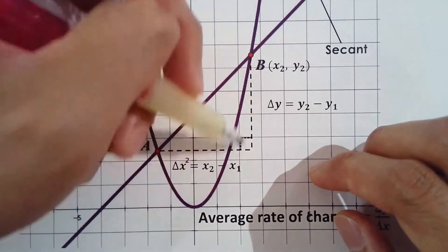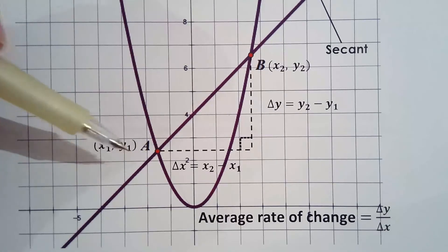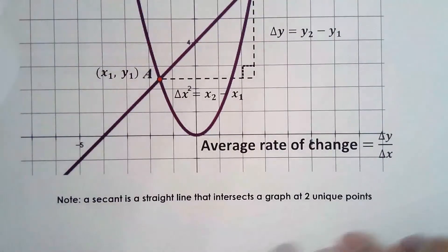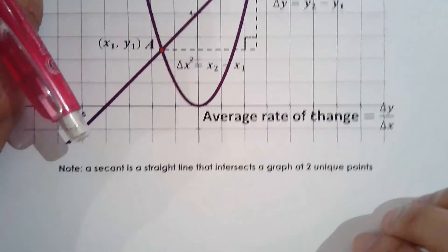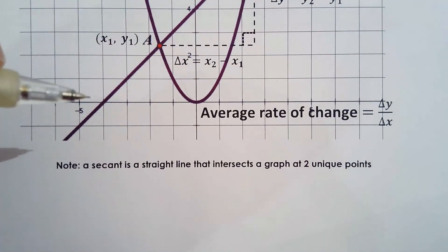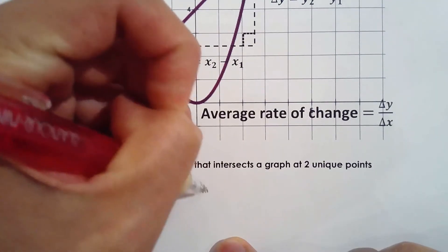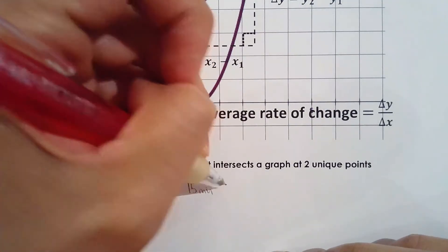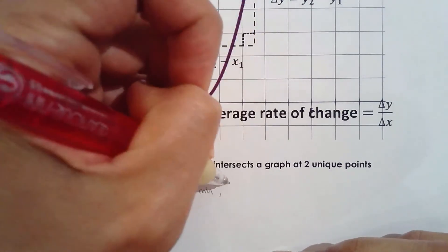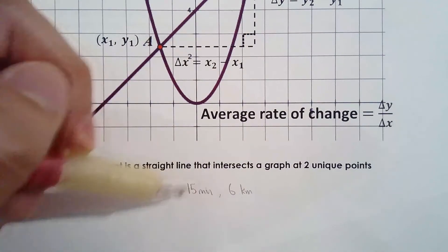When you join two points using a line, you're ignoring everything that happens in the middle — and that makes sense, because you're talking about average rate of change. Imagine you're driving to school. I actually drove to a Pizza Hut today and noted some numbers to help illustrate this lesson.